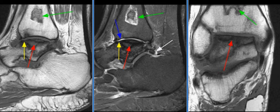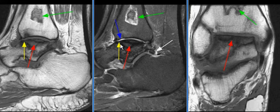A 50-year-old taking steroids for bone marrow transplant complained of ankle pain. MRI examination shows sclerosis of the talar dome with a serpentine hypo-intense and variably hyper-intense border, consistent with avascular necrosis.